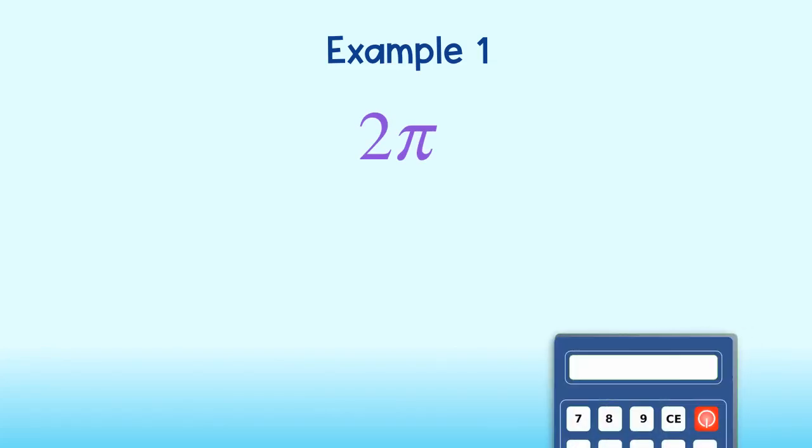For example, what is the value of 2π? We can use the calculator to find the answer. 2 times pi is equal to the following decimal.